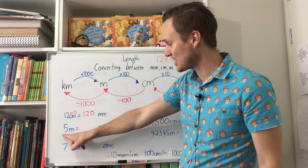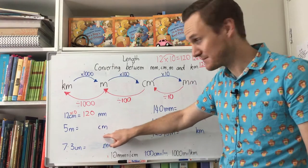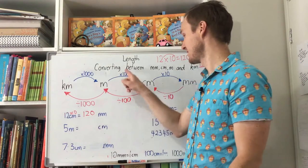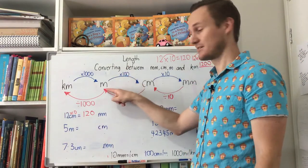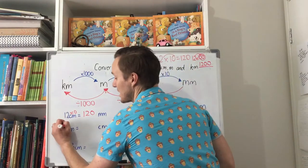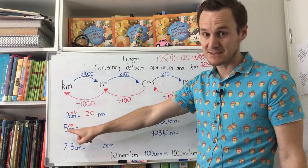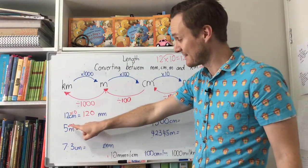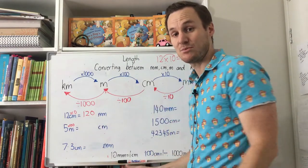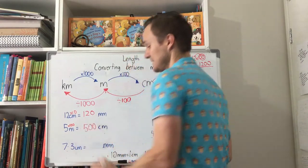Now when we're changing 5 metres into centimetres, because there are 100 centimetres in a metre, we're going to times it by 100. If you're timesing by 100, there are two zeros, so you can just add those zeros to the other number — which is the 5 — so it becomes 500 centimetres.